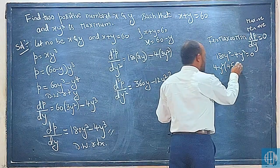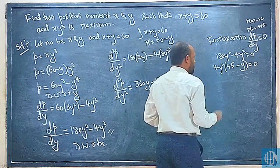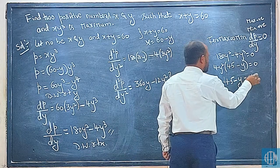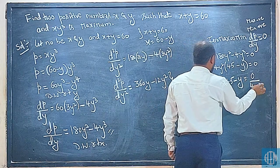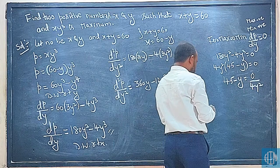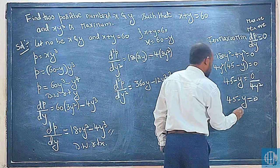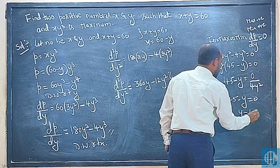45 minus y equals 0 times 4y². Zero times something is zero, so 45 minus y equals 0. Therefore y is equal to 45.